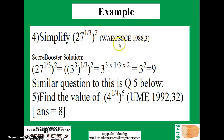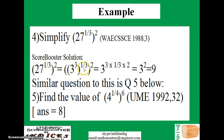This is from WAEC SSCE 1988, question number 3: simplify 27 raised to power 1 over 3, everything raised to power 2. The solution: first factorize 27 — it becomes 3 raised to power 3. Write everything else as before. To open the brackets, multiply all the exponents: the 3 in the base and the 3 in the exponent cancel, leaving 1 times 2, giving 3 raised to power 2, and the final answer is 9.